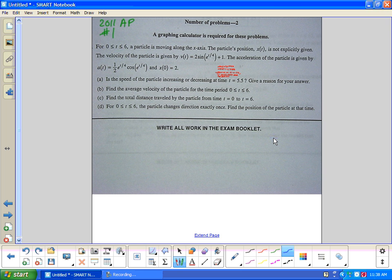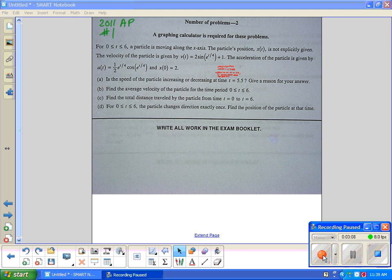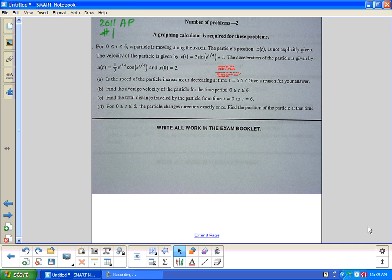Part B: Find the average velocity of a particle for the time zero to six. If we're going to find the average velocity, we're going to have to do an integral. We have to realize that's total distance divided by total time. So in this case, from zero to six, this is going to be one sixth, or one over six minus zero. Think about the units, that would be time.